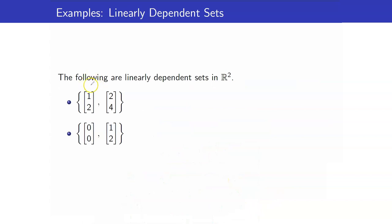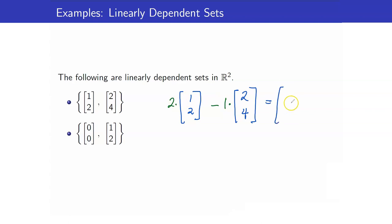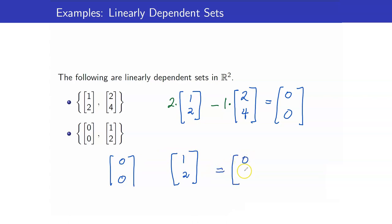Here are some examples of linearly dependent sets in R2. We have {(1,2), (2,4)}. This is linearly dependent because 2 times (1,2) minus 1 times (2,4) equals (0,0). For another example involving the zero vector (0,0) and (1,2), I can always put any non-zero number in front of the zero vector — say 5 — and the result will still equal the zero vector. Therefore, that set is linearly dependent.